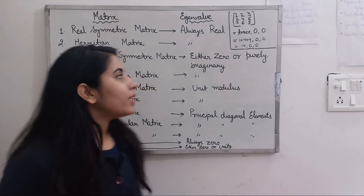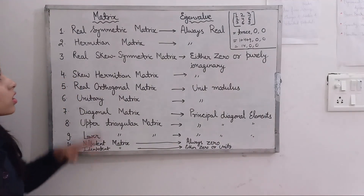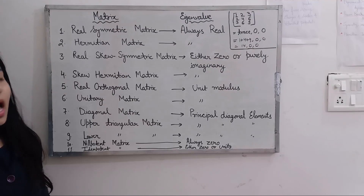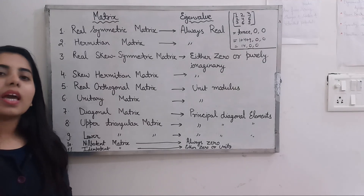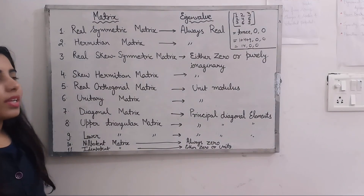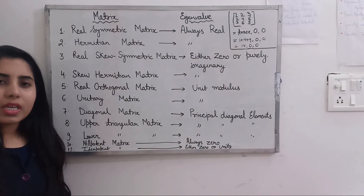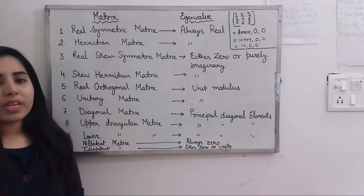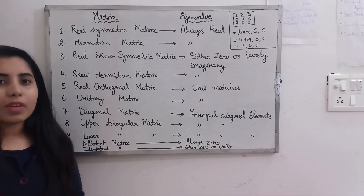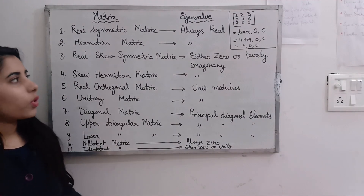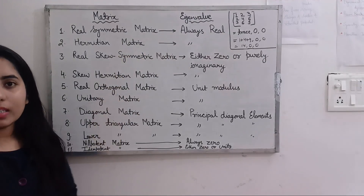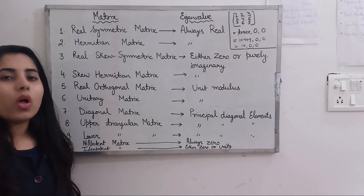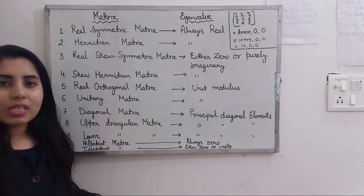The first type of matrix we are going to cover is the real symmetric matrix. If you are asked about a symmetric matrix or real symmetric matrix, the corresponding eigenvalues are always real. You have to remember this because in exam options you may see: real, imaginary, zero, unit modulus, or none of these.